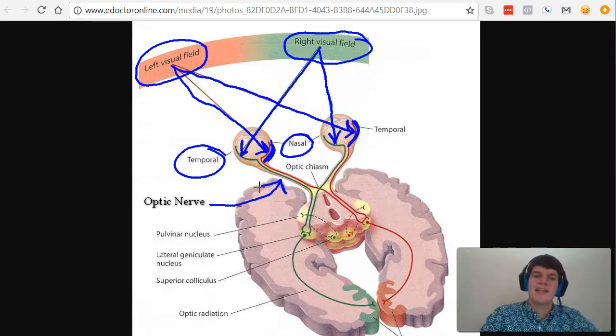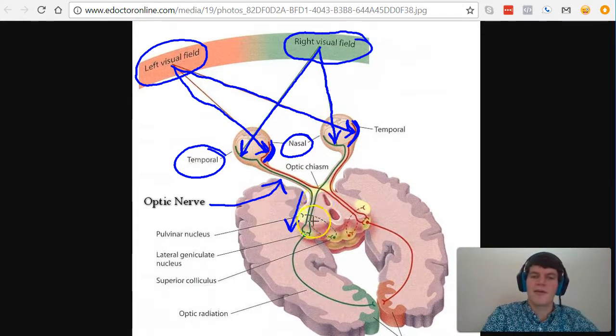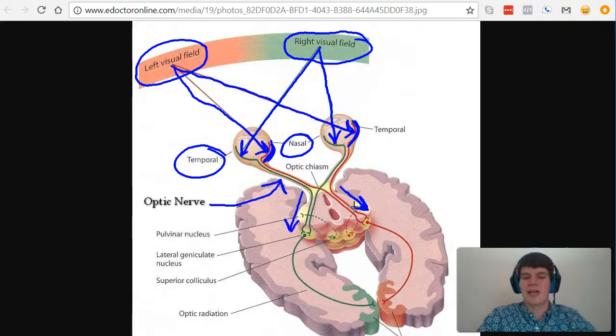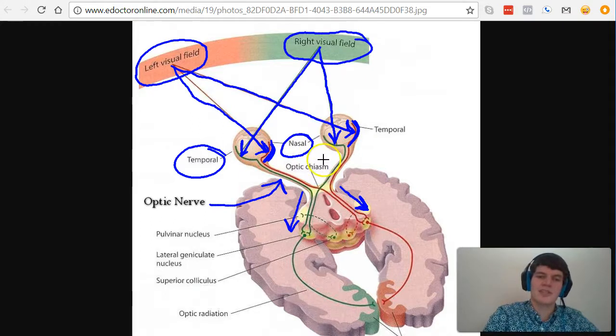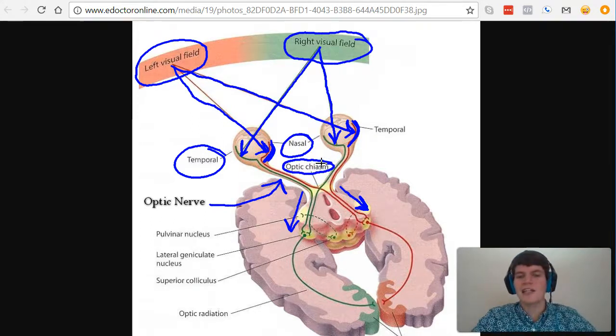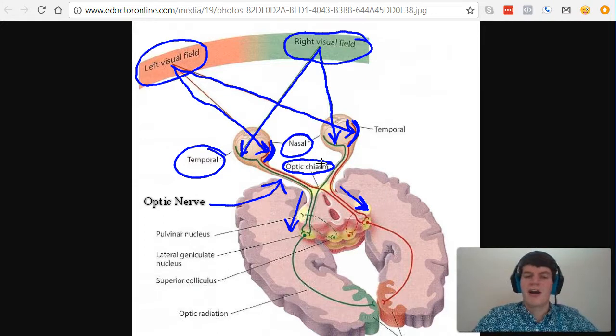You'll notice that the right visual field crosses over and ends up on the left side of my body—there's green on both of these lines corresponding to the right visual field. The left visual field crosses over and ends up solely on the right side of the body. That's why the optic chiasm is so important—it's where the visual fields cross, making them contralateral. The right goes to the left, left goes to the right.